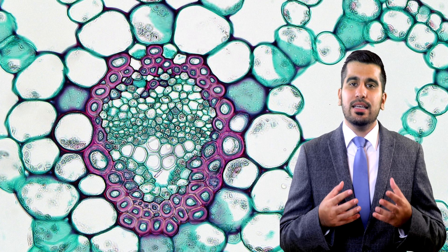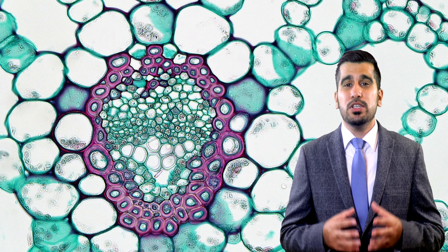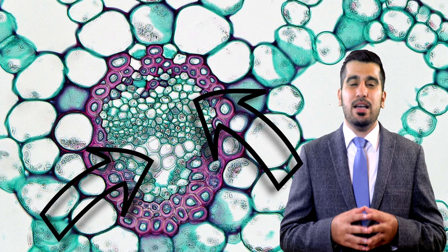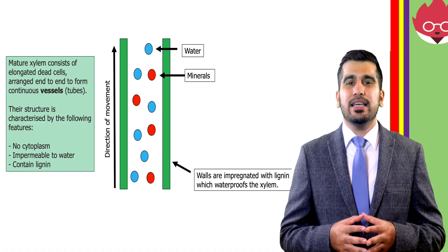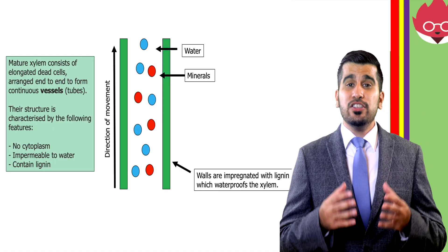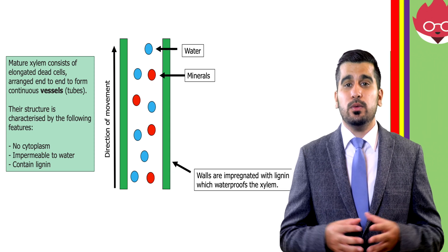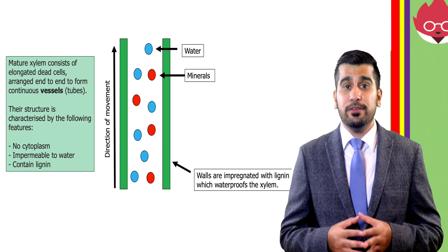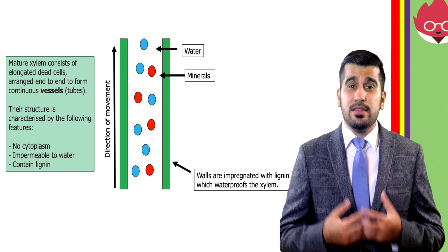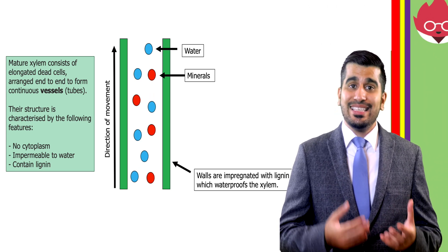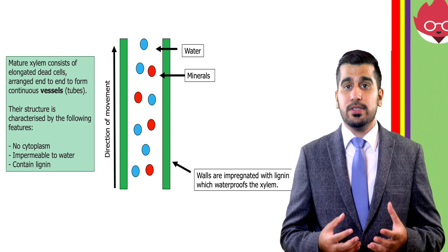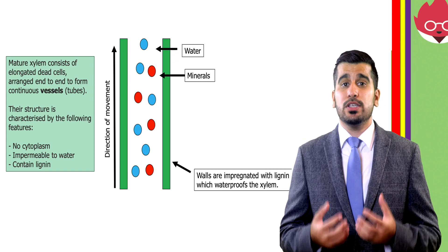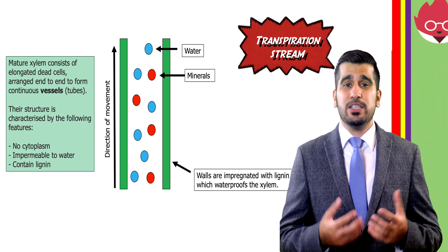The vascular bundle contains important tissue that transports water, nutrients and minerals. The two tissues we'll be talking about in today's lesson are the xylem and the phloem. Mature xylem consists of elongated dead cells arranged end to end to form a continuous vessel or tube. They are responsible for moving water and minerals in the plant. Their structure is characterised by the following features: they don't have a cytoplasm, they're impermeable to water, they contain lignin which waterproofs them, and there is a single direction of movement — upwards — as they transport water to the leaves. This movement of water forms a transpiration stream.